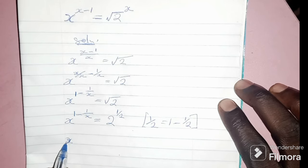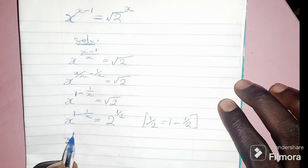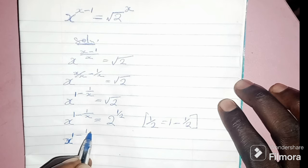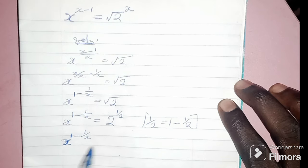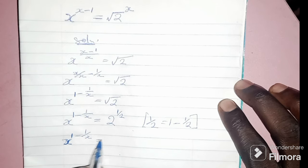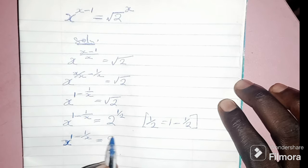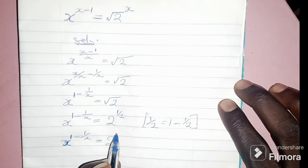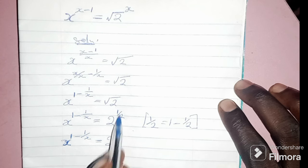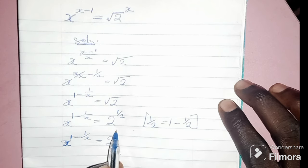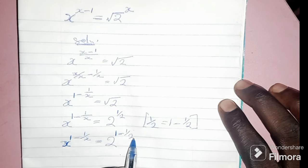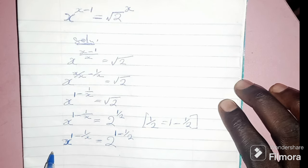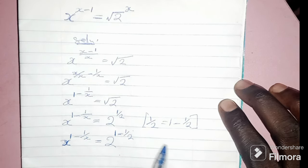So we have x to the power of 1 minus 1 over x, equal to 2 to the power of 1 minus 1 over 2. Now we need to recall an important identity.